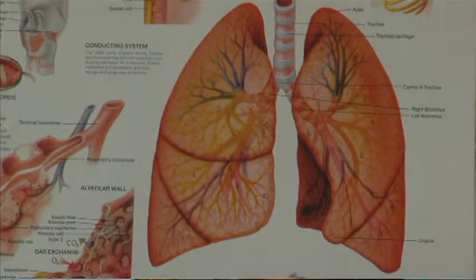Thrush is seen in immunocompromised patients. Asthma is a chronic lung disease with narrowing of the airways and inflammation causing shortness of breath and wheezing. It also occurs on a sporadic basis, where intermittent forms of asthma will come on.